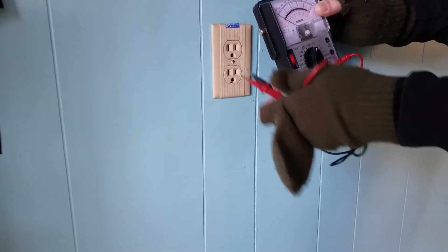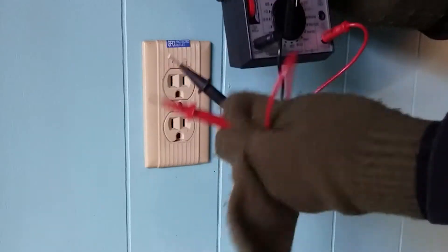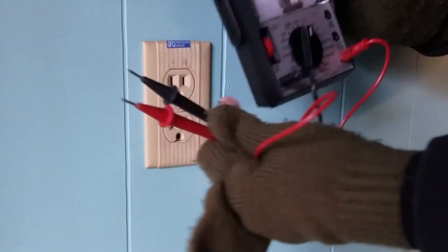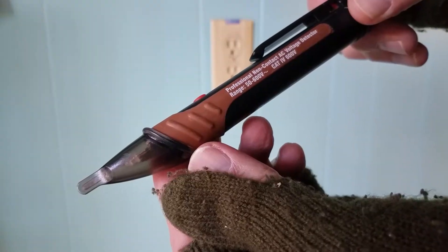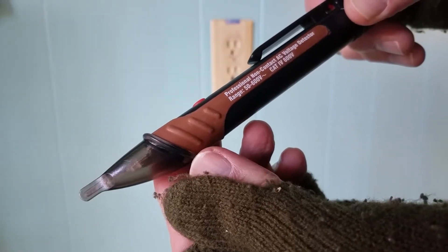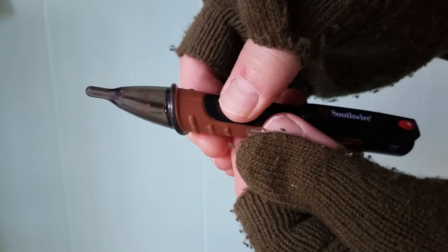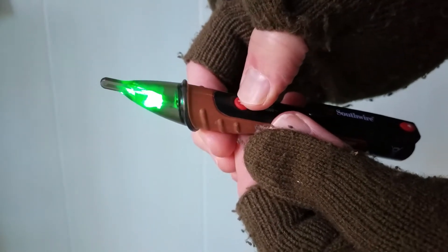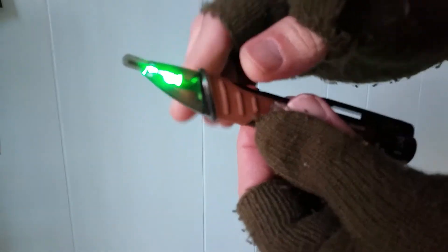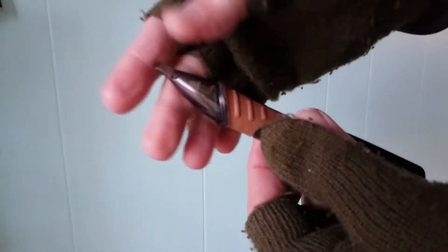It will verify that the voltage has been turned off when you open the circuit breaker, but it is cumbersome at best. This finally leads us to the non-contact voltage detector. It's a simple device, not all that expensive. Turns on, gives you a green light when there's no current in the area.